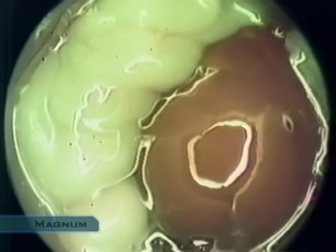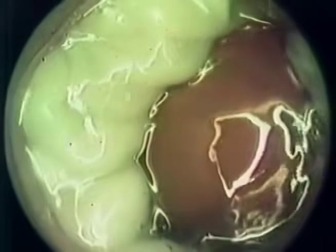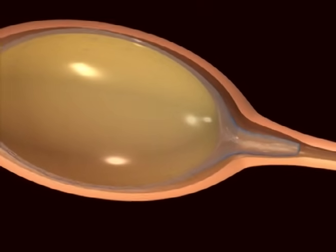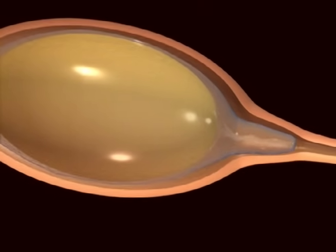The yolk spends about 15 minutes in the infundibulum before it passes into the magnum. In the magnum, over a period of about three hours, it will be covered by a dense, shock-absorbing layer of albumin, or egg white.